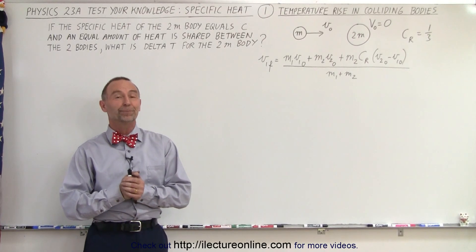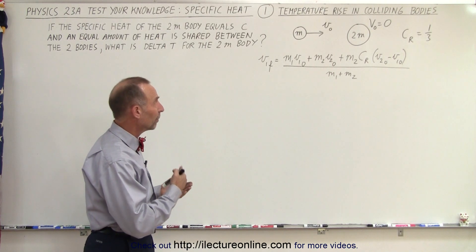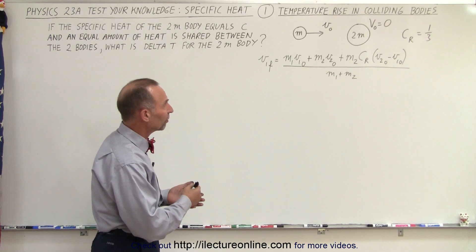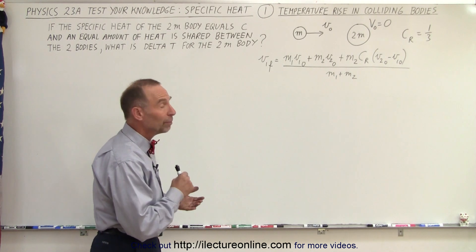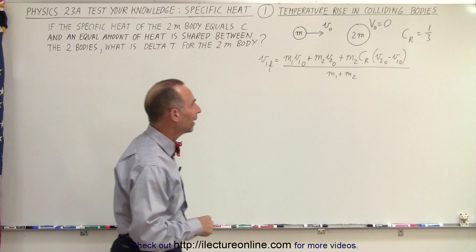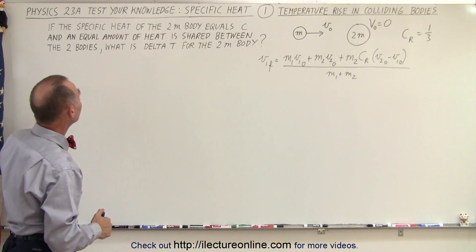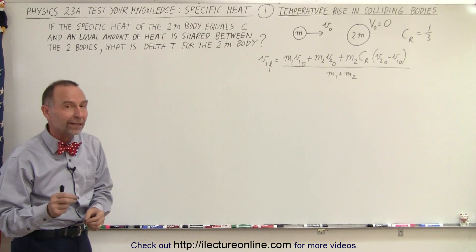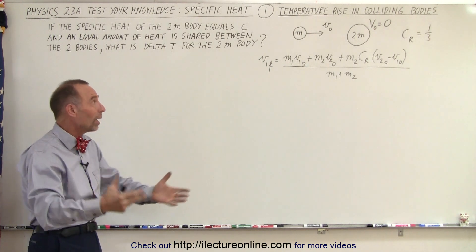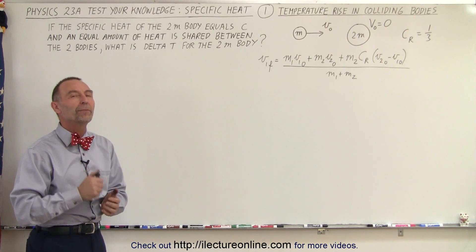Welcome to ElectronLine. Here's a rather challenging problem for you. Let's say we have two bodies: a body with mass m and a body with mass 2m. The body with mass m has an initial velocity v-sub-naught and the body with mass 2m has zero initial velocity. There's a head-on collision and the coefficient of restitution is equal to one-third. If we assume that the specific heat of the 2m body is equal to c, and an equal amount of heat is shared from the collision between the two bodies, then what is delta t — the change in temperature for the 2m body?